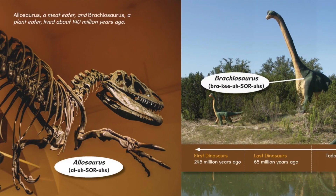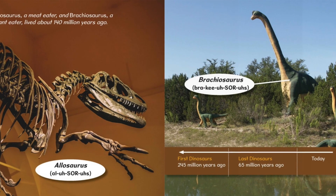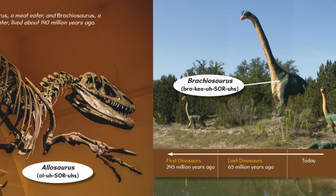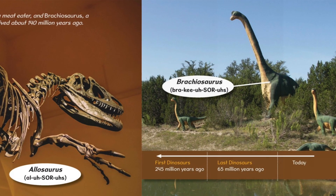Allosaurus, a meat-eater, and Brachiosaurus, a plant-eater, lived about 140 million years ago.